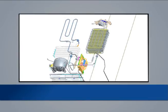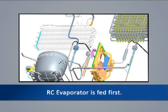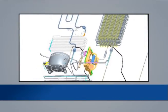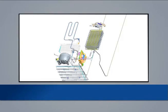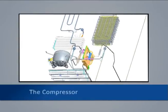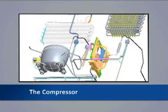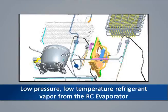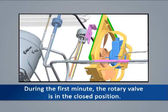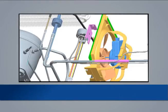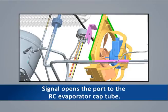On an initial start-up of a dual evaporator system, the RC evaporator is fed first. After that, the control supplies refrigerant to the evaporator most in need of cooling. Assume a refrigerator has been operating normally and the board has determined the RC compartment requires cooling. Starting at the heart of the refrigeration system, the compressor and condenser fans are energized by the control board. The compressor pulls low pressure, low temperature refrigerant vapor through the suction line from the RC evaporator. The vapor is compressed to a high pressure, high temperature vapor and exits the compressor through the discharge line to the condenser. During the first minute of compressor operation, the rotary valve is in the closed position. One minute later, the control board sends a signal to the rotary valve, which opens the port to the RC evaporator cap tube.